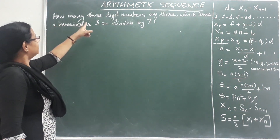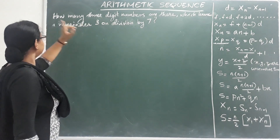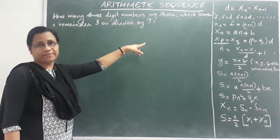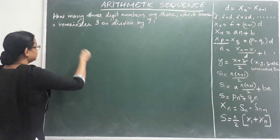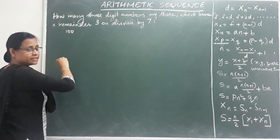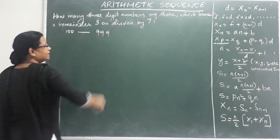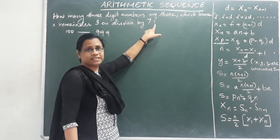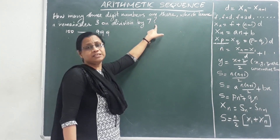Next question: How many 3-digit numbers are there which leave a remainder 3 on division by 7? A 3-digit number starts at 100 and ends at 999. We will divide by 7 and find numbers with remainder 3.